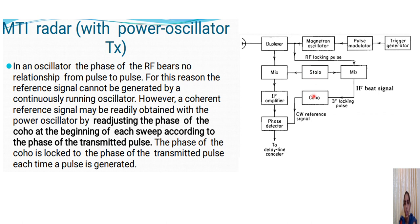Each time an echo is received, the phase of the coherent oscillator must be adjusted. The phase of the coherent oscillator is locked to the phase of the transmitted pulse each time a pulse is generated, since the oscillator has no fixed phase relationship from pulse to pulse. A continuous locking mechanism is required so the reference stays in accordance with the transmitted pulse.